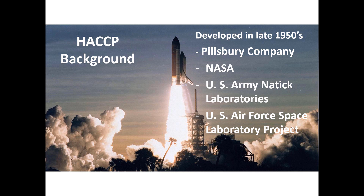They achieved this objective by using a critical control point system from the US Army Natick research, which was normally used for ensuring the quality of medical supplies. The original HACCP programme had only three principles, and soon after the success of the application of HACCP with Pillsbury and NASA, Pillsbury continued their innovation and implemented it in its food operations and food facilities to great success, ensuring they were producing safe food.